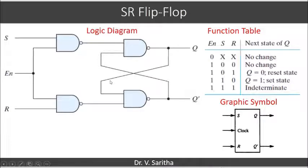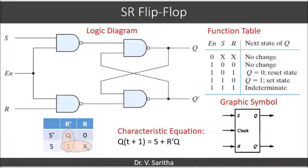This is the final logic diagram we have discussed, this is the function table, and this is the graphic symbol. Now we are supposed to get the characteristic equation for SR flip-flop. Using K-map with S bar S R bar R: when S and R are 0 0, it is Q—no change state, preserving its state. When S is 0 and R is 1, we get 0. When S is 1 and R is 0, it is 1. When both are 1 1, it is don't care case. The characteristic equation is Q(t+1) = S + R'Q.